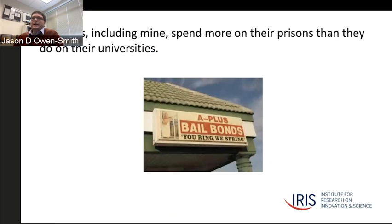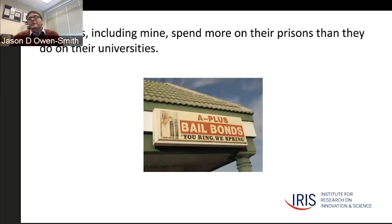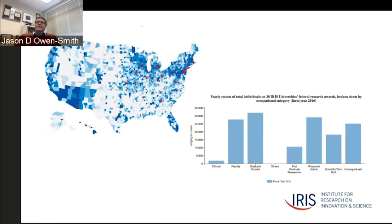We can demonstrate from public data that university areas are more likely to be home to professional services firms, research labs, publishers, and a variety of other economically dynamic organizations, whereas the areas around prisons tend to be more closely associated with social service organizations and churches—organizations that are very important but that are not motors for growth quite often.